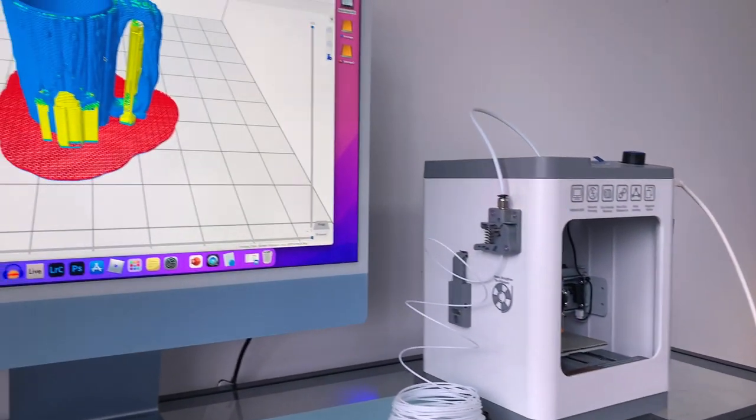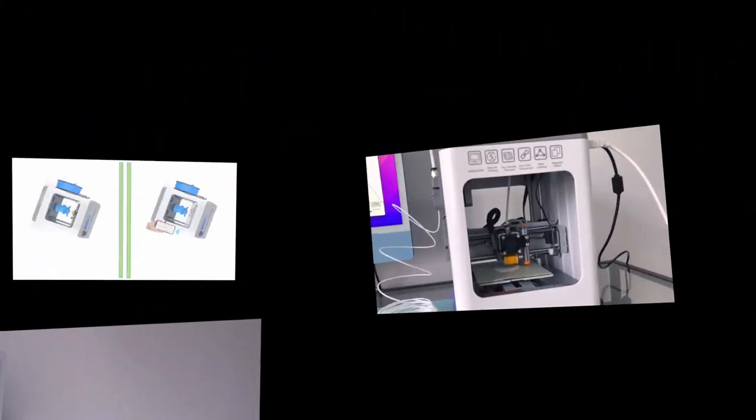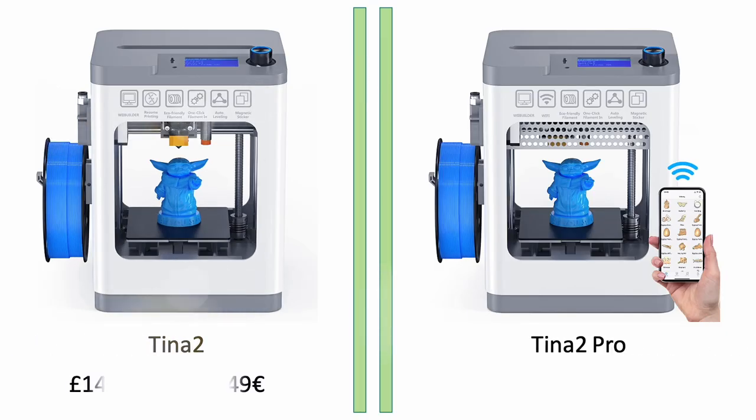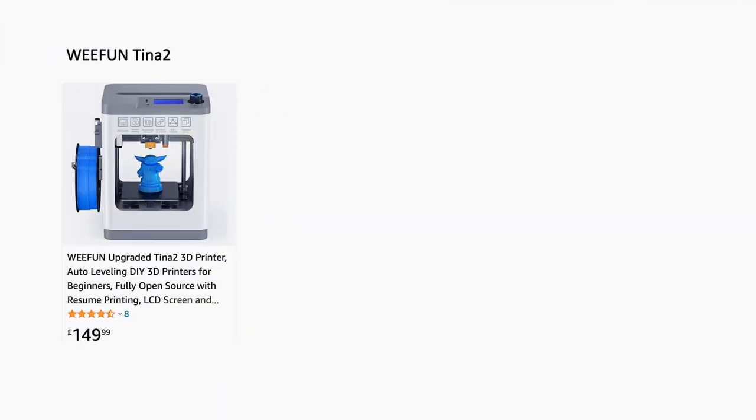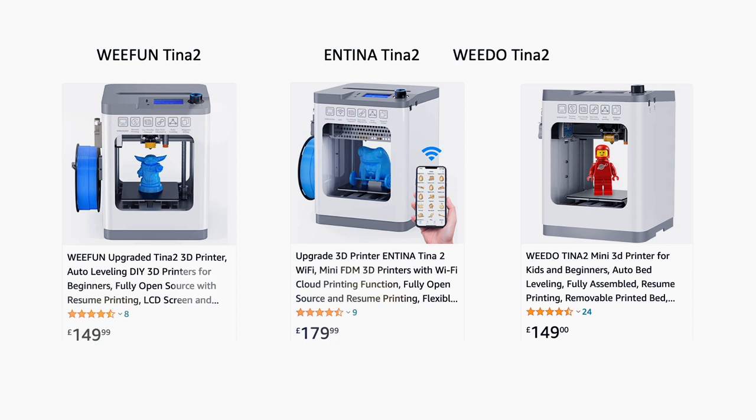The TINA2 3D printer is available on Amazon for under 150 American dollars or 150 British pounds, as well as under 150 euros, which is a great price for such a well-designed device which produces great quality prints. If you want to check it out there are Amazon affiliate links in the video description.